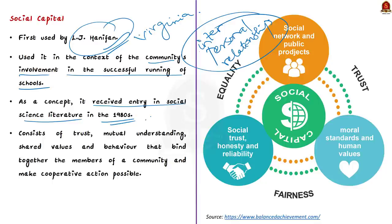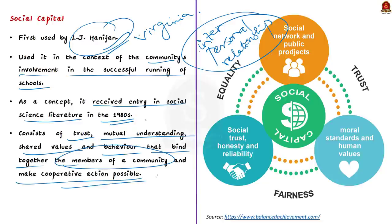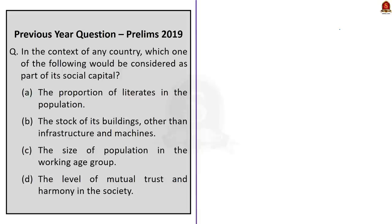Social capital assumed an economic connotation and came to be accepted as a factor of production in development theory. It refers to those institutions, relationships and norms that shape the quality and quantity of society's interaction. It consists of trust, mutual understanding, shared values and behavior that binds together members of a community and makes cooperative action possible. Such interaction enables people to build communities and knit the social fabric. So the correct answer is option D.